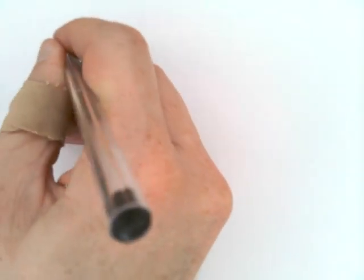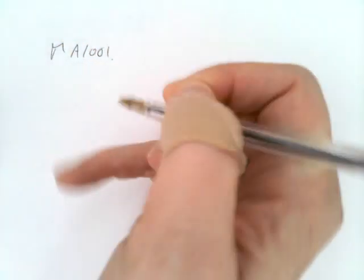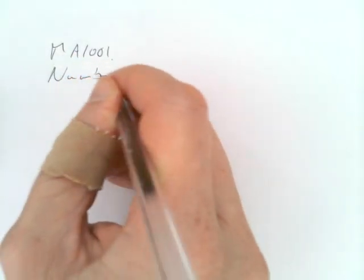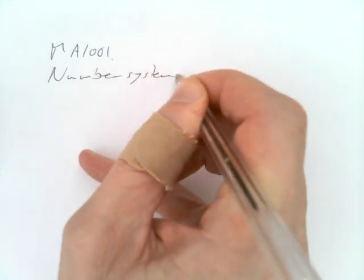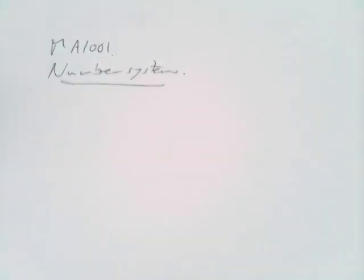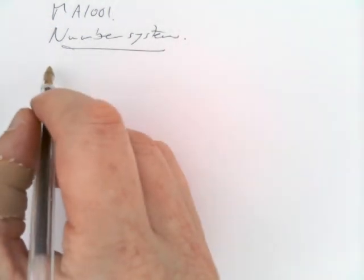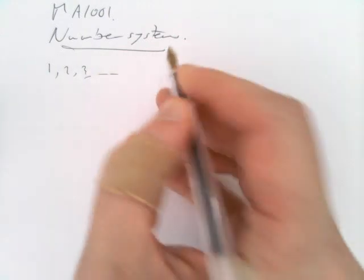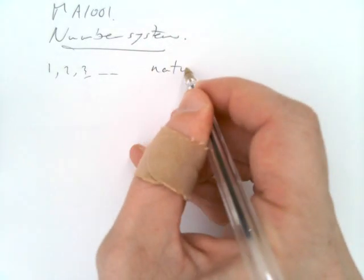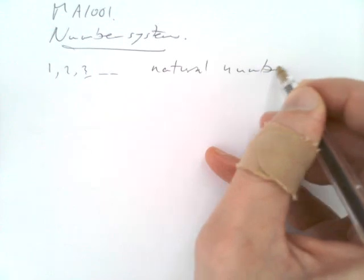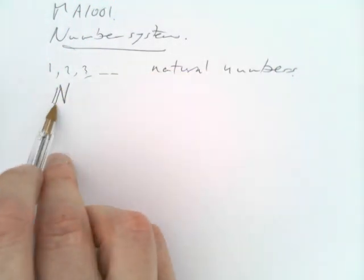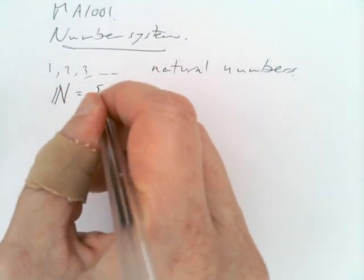This is our first theory video for MA-1001. We're going to talk about number systems and inequalities. Let's start with number systems — we're thinking about various different types of numbers. For example, the numbers 1, 2, 3, and so on are called the natural numbers. If we write the capital N with two backs on it, that's the set of all natural numbers.